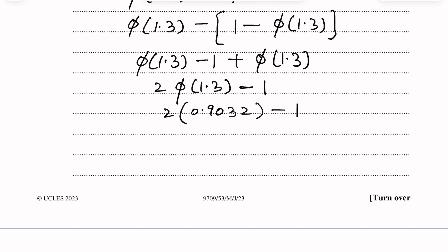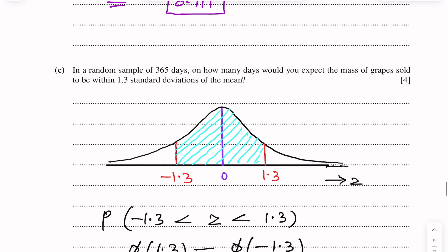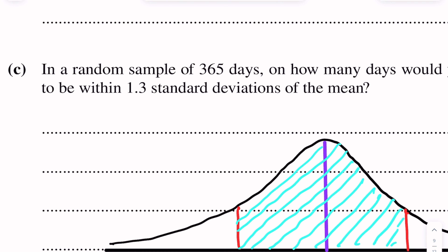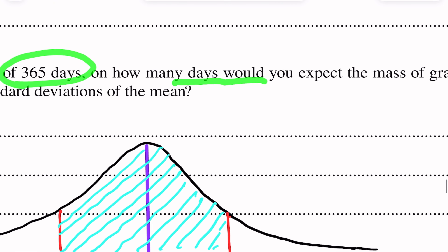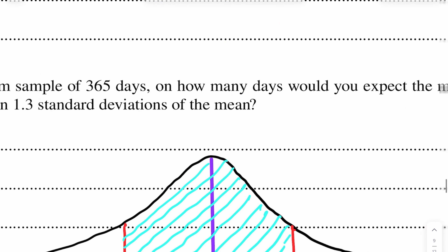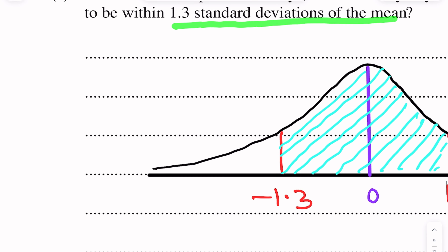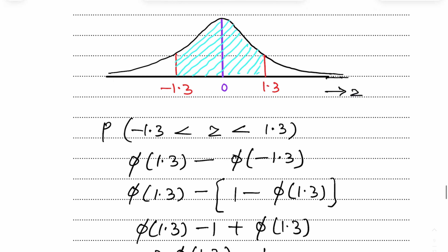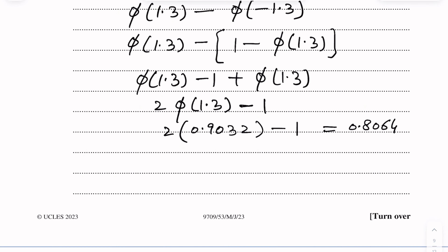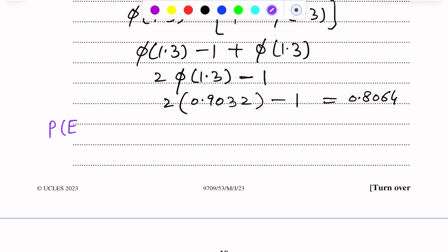After calculation we get the probability as 0.8064. But we need to find the expected number of days, not just the probability. In a random sample of 365 days, we use the general probability formula: probability = number of successful outcomes over total outcomes.